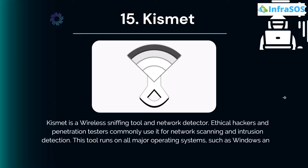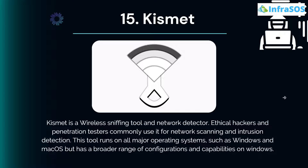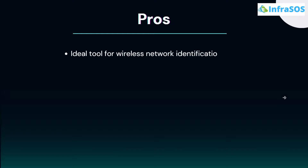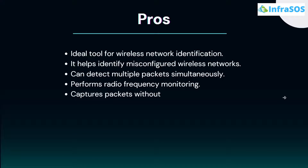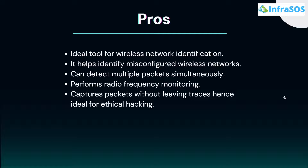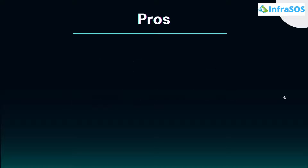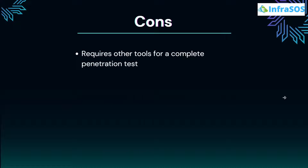At number 15 we have Kismet. Kismet is a wireless sniffing tool and network detector. Ethical hackers and penetration testers commonly use it for network scanning and intrusion detection. This tool runs on all major operating systems such as Windows and macOS, but has a broader range of configurations and capabilities on Linux. Major pros include wireless network identification, helping identify misconfigured wireless networks, and detecting multiple packets simultaneously. Cons include requiring other tools for complete penetration testing and network searching being quite time-consuming.